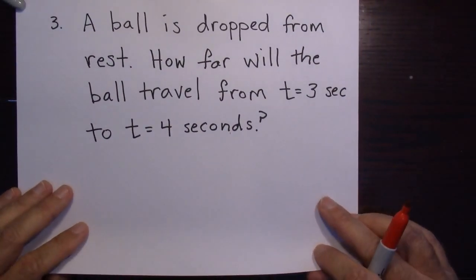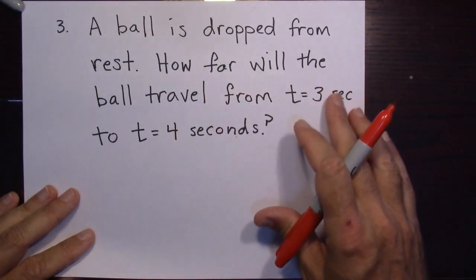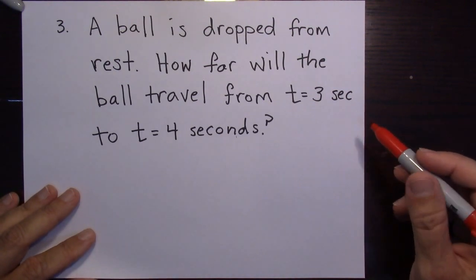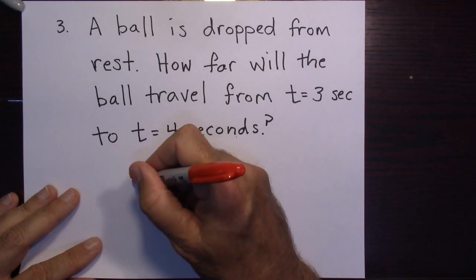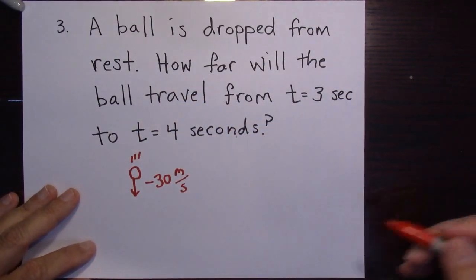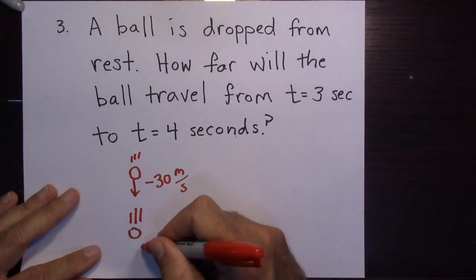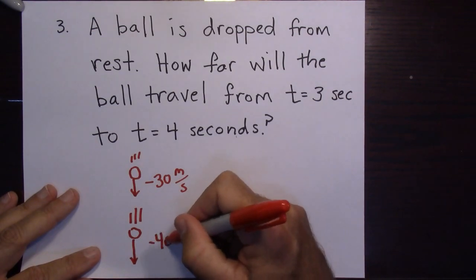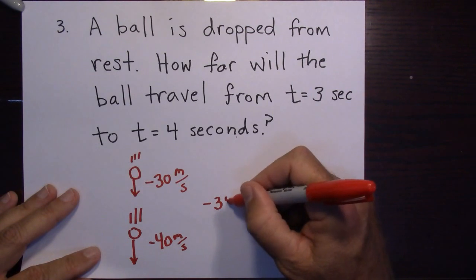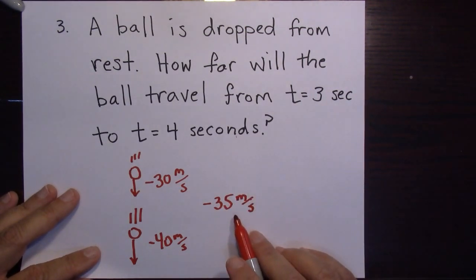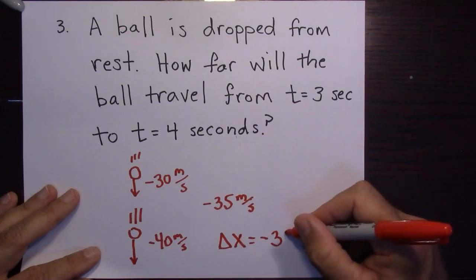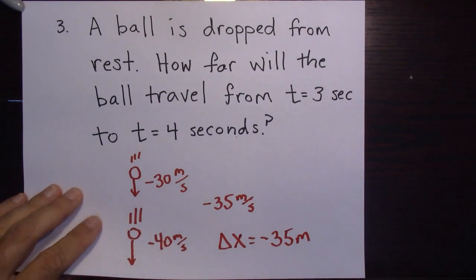Another one: a ball is dropped from rest. How far will it travel from the third second to the fourth second of travel? After three seconds it's going negative 30 meters per second. After four seconds it's going negative 40 meters per second. The average velocity is negative 35 meters per second. Over one second, delta X equals negative 35 meters — it falls 35 meters in that interval.